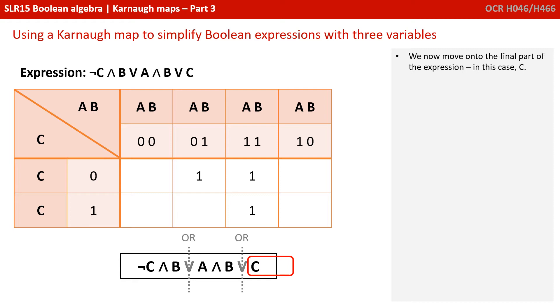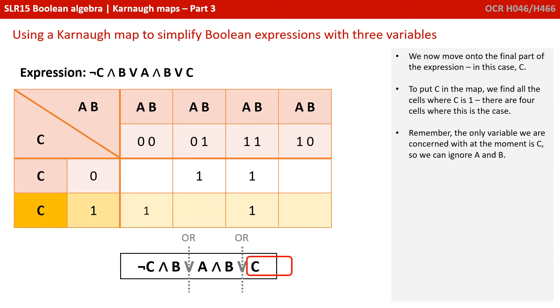We now move on to the final part of the expression, in this case, C. We put C in the map. We find all the cells where C is 1, and there are four cells where this is the case. Remember, the only variable we're concerned with at the moment is C, so we can ignore A and B.